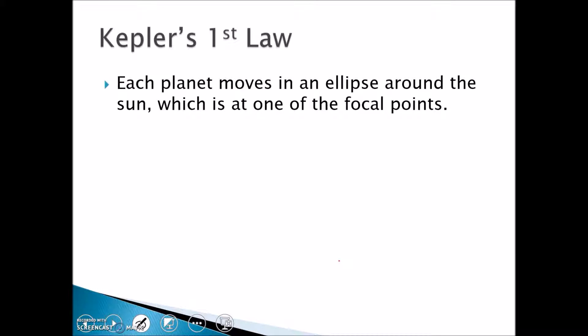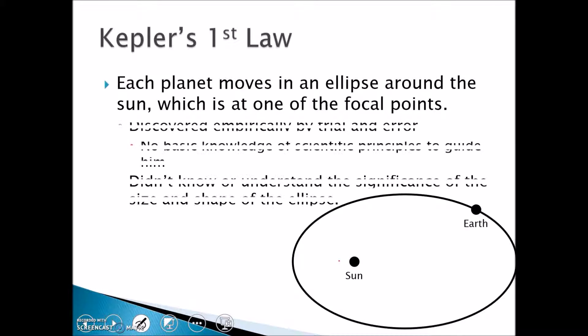Here's an example of the Earth's orbit - not nearly this elliptical - and we have the sun at one of the focal points. The Earth is going around. This was discovered by trial and error. Kepler was a mathematician, not a scientist. He had no idea of the significance of these discoveries. All he knew was this is what the data showed.